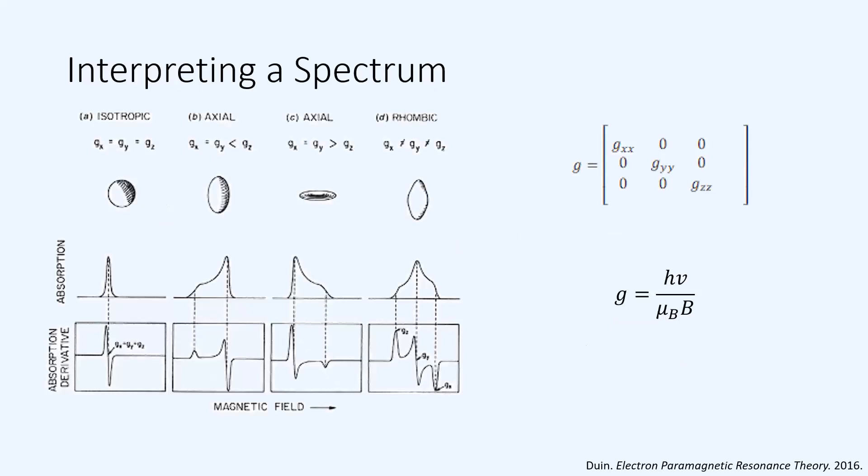Now, we would like to take a look at some possible spectra, and try to interpret and report them. The simplest spectrum is going to be isotropic. There is no anisotropies in an isotropic spectrum.